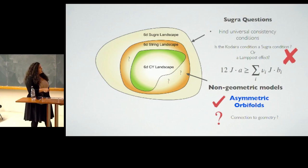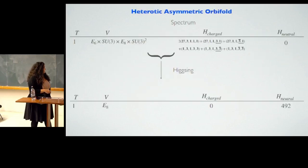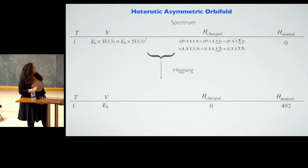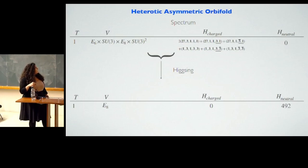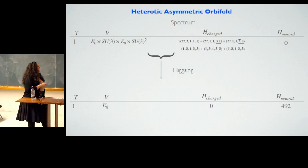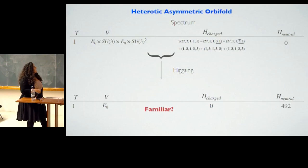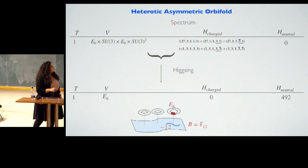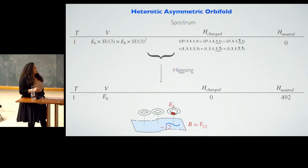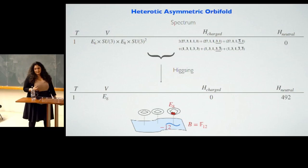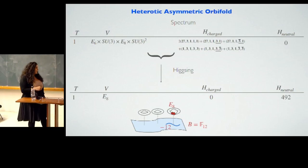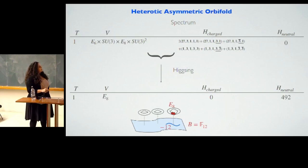What's interesting is to ask whether there is a connection to geometry in this picture. In fact, if you Higgs this theory — you have so much charged matter and you Higgs it — you actually find one tensor, E8, no charged matter, and 492 neutral hypers. Some F-theorists in the crowd may recognize this model. It's the F-theory model with a base F12 that just gives you the E8 model. The massless spectrum looks like it could be related to this, which I'm going to come back to.